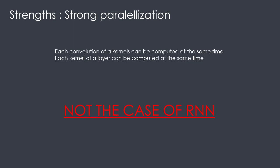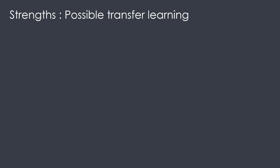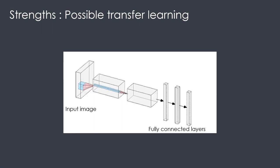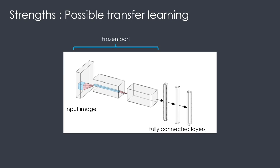If you wonder why parallelization is important, I invite you to look at a video I already published, the link is in the description. Another great strength of convolutional networks is transfer learning. Transfer learning is a concept where you train a neural network that has seen very different images from many fields — people, animals, cars, planes, etc. The features detected can be reused: the frozen part of the network that detected features can be applied to new tasks.